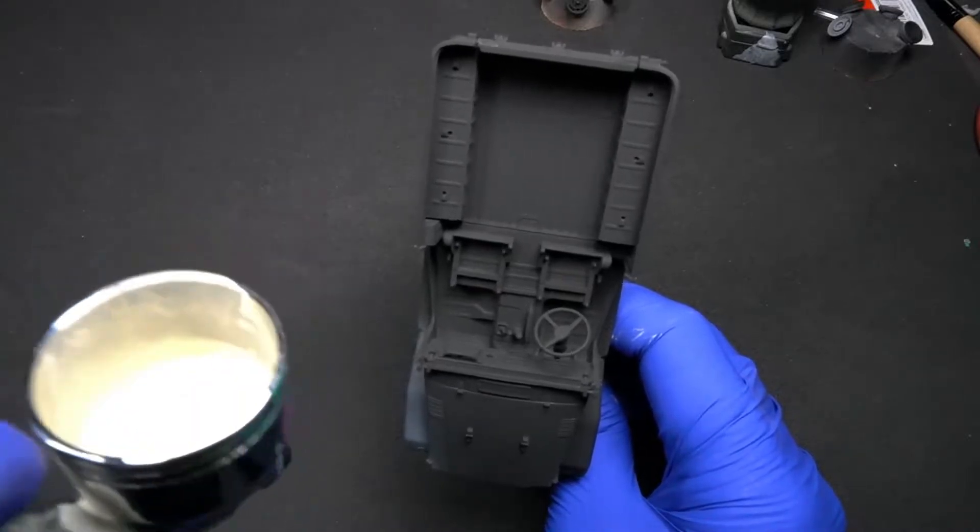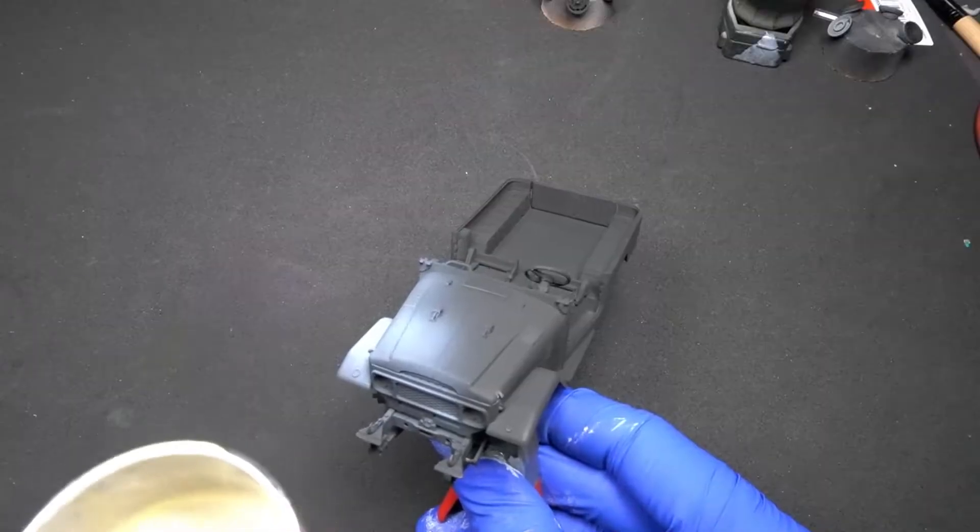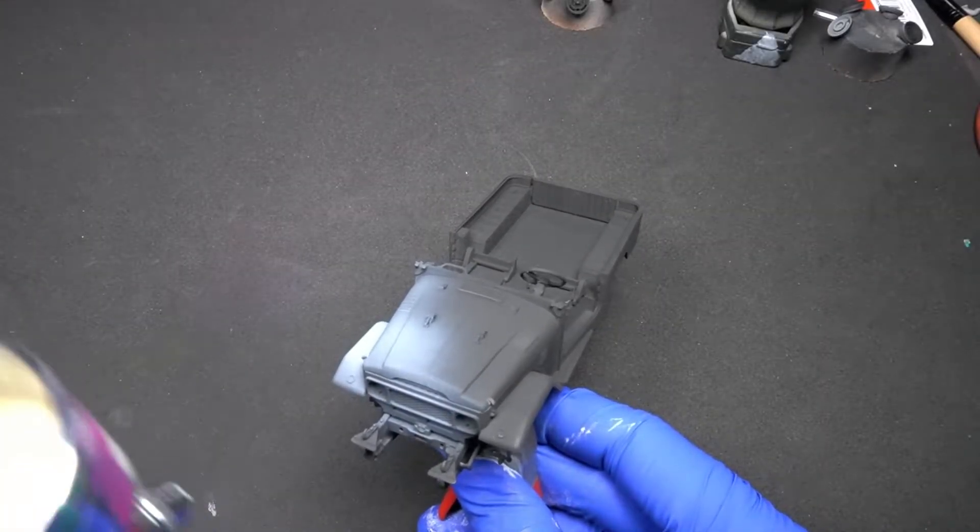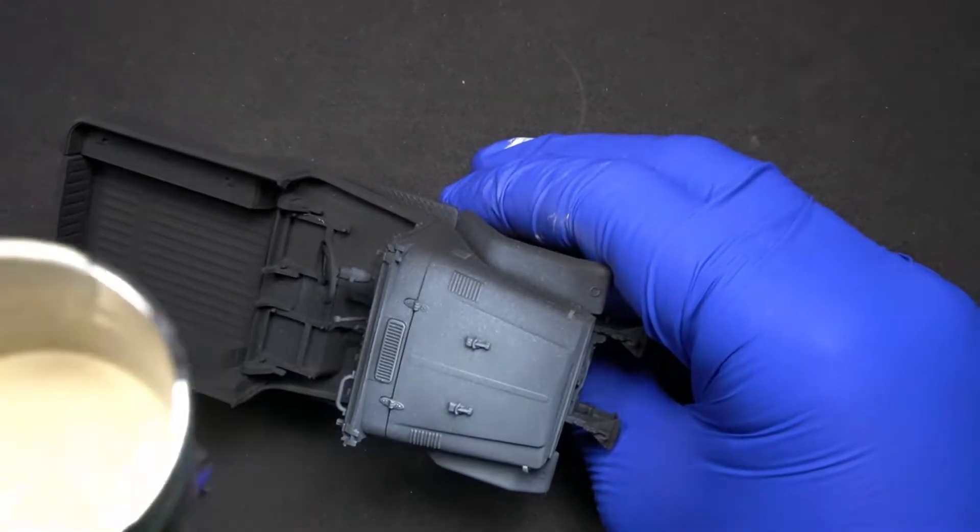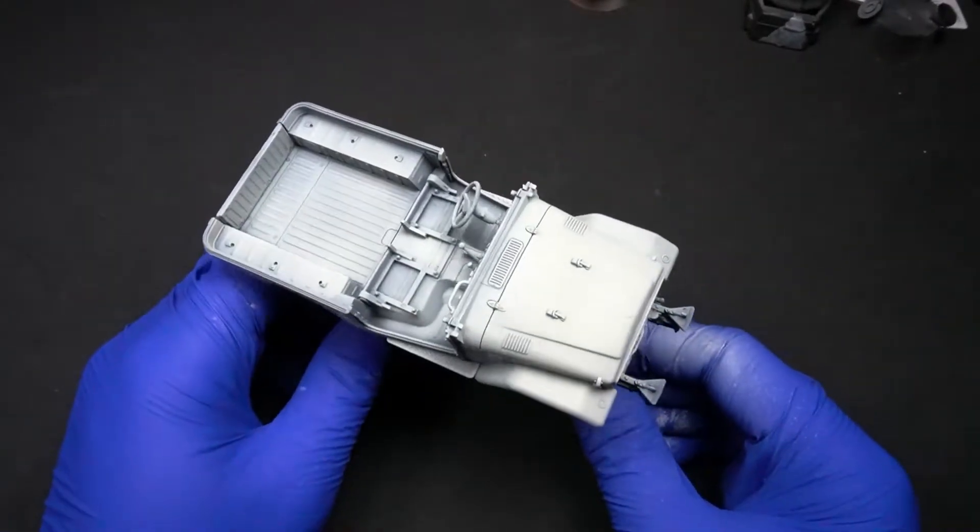When the primer coat is dry, we can proceed with grimy grey paint, which will be applied all over the vehicle. Remember that white colored paints need to be diluted a little more, as they have a thicker pigment.